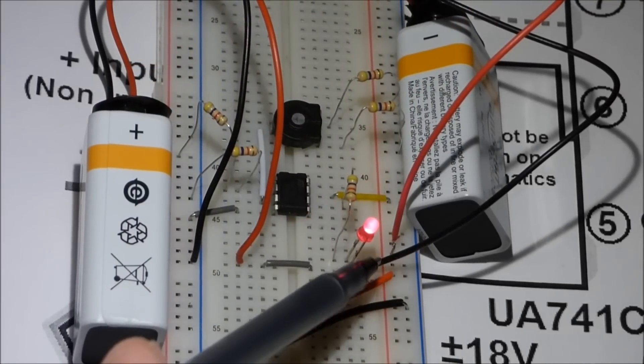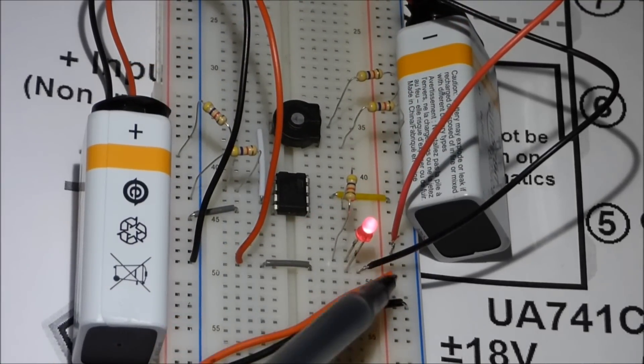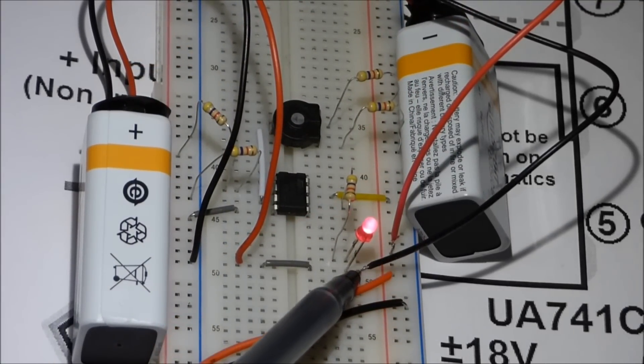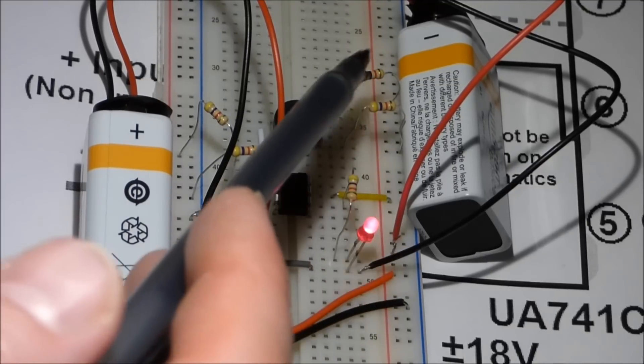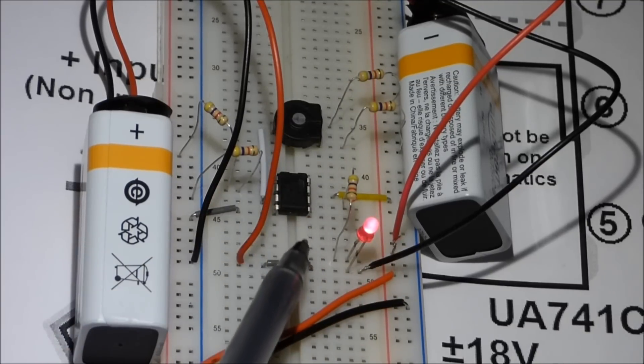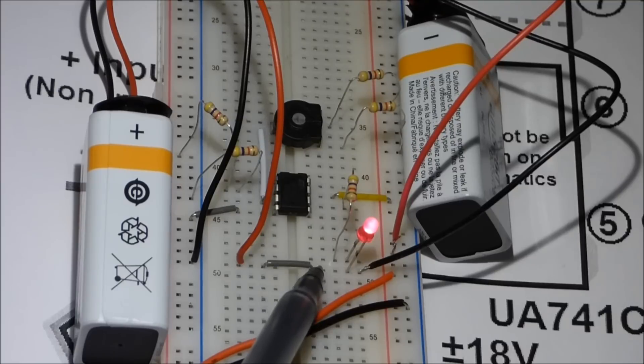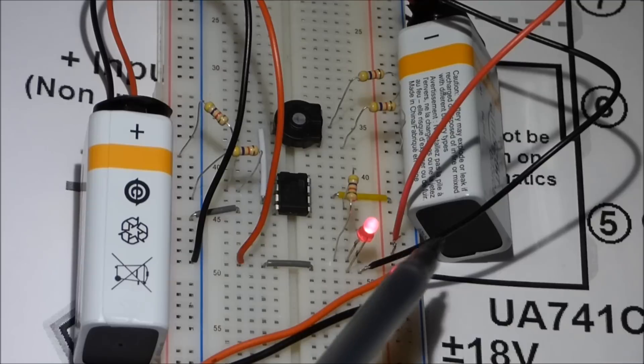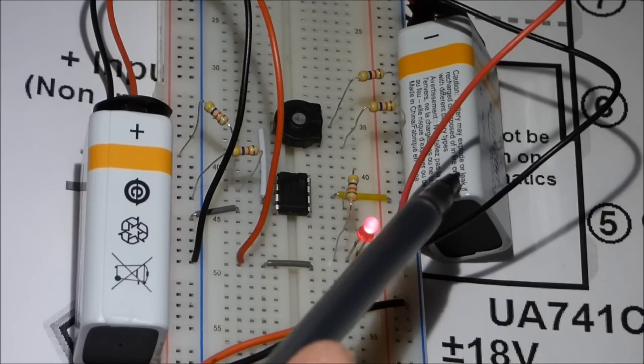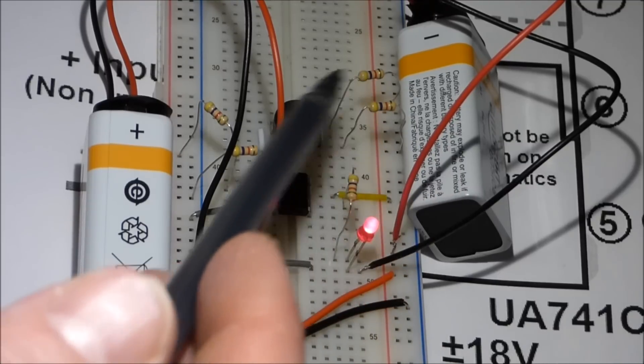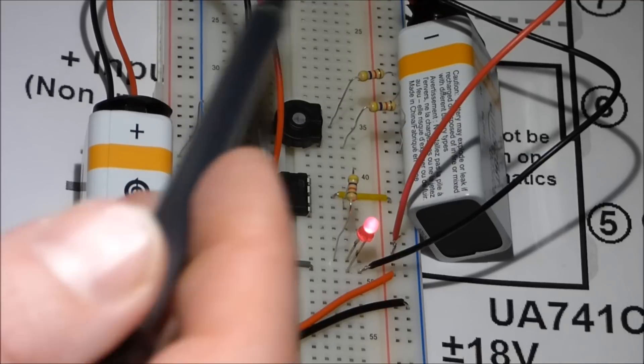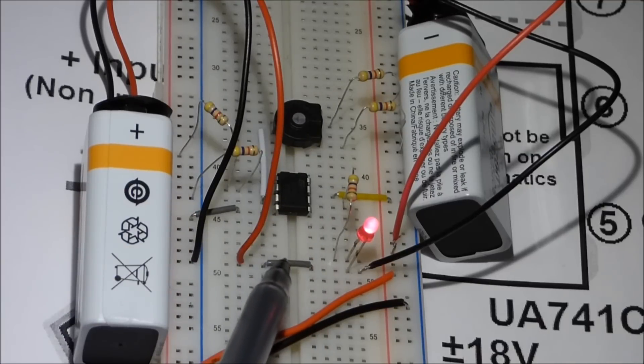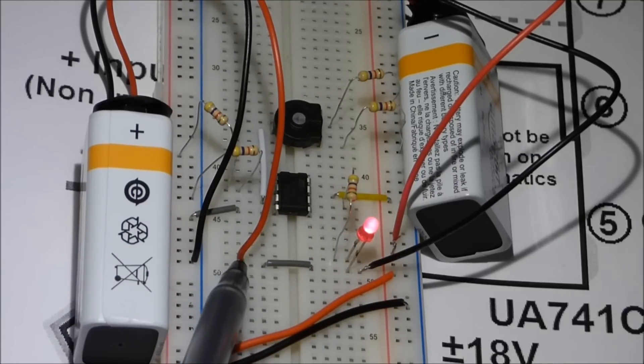So since this has a positive connected to the power rail and then negative connected to the ground, that means that it can send a positive charge through the circuit, and then it can come to the ground and then go back to negative. So that means this battery can give parts of the circuit a positive charge, whereas this battery, the negative is connected to the power rail.